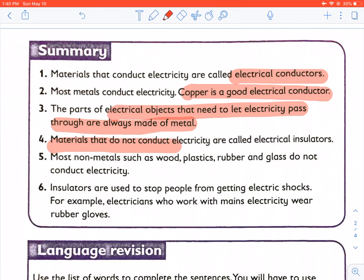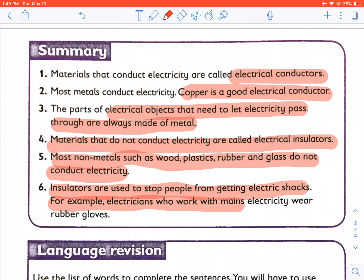Materials that do not conduct electricity are called electrical insulators. Most non-metals such as wood, plastic, rubber and glass do not conduct electricity. Insulators are used to stop people from getting electric shocks. For example, electricians who work with mains electricity wear rubber gloves.